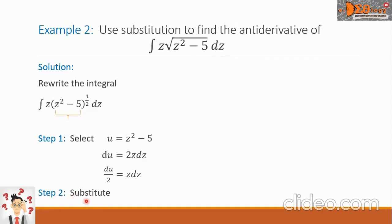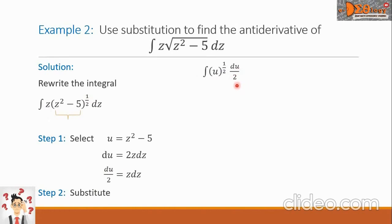Step 2: Substitute the values found in Step 1. So we have the integral of the quantity z squared minus 5 — that is u — raised to the exponent 1/2, and z dz is replaced by du over 2. The denominator 2 is a constant that we can move outside the integral sign. So we have 1/2 times the integral of u raised to 1/2 du.